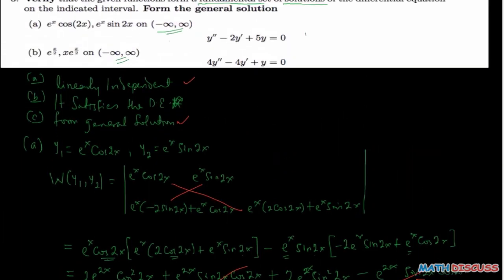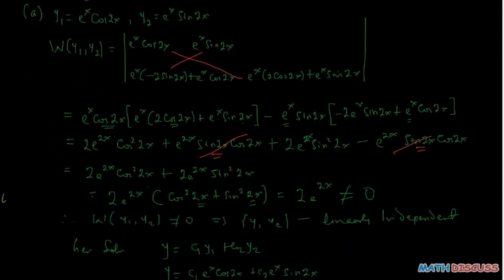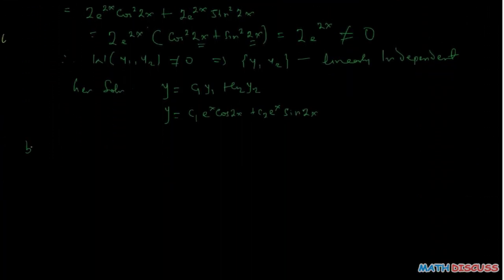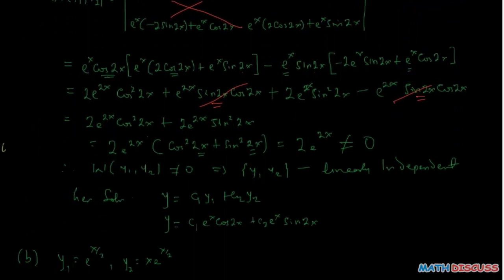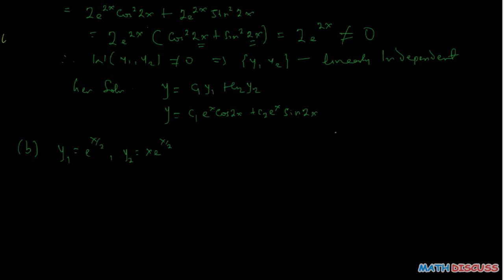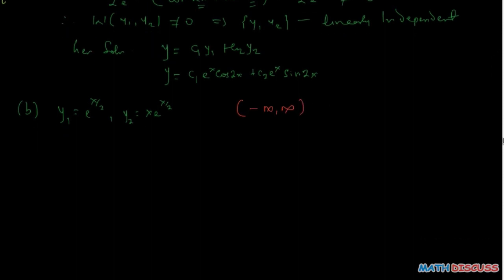For the next part, our y1 is e to the power x over 2 and our y2 is x·e to the power x over 2. You should ensure you check that these satisfy the differential equation as well. All we are doing here is checking linear independence and forming the general solution. We confirm we are doing the right problem — and we want to check on the interval negative infinity to infinity.